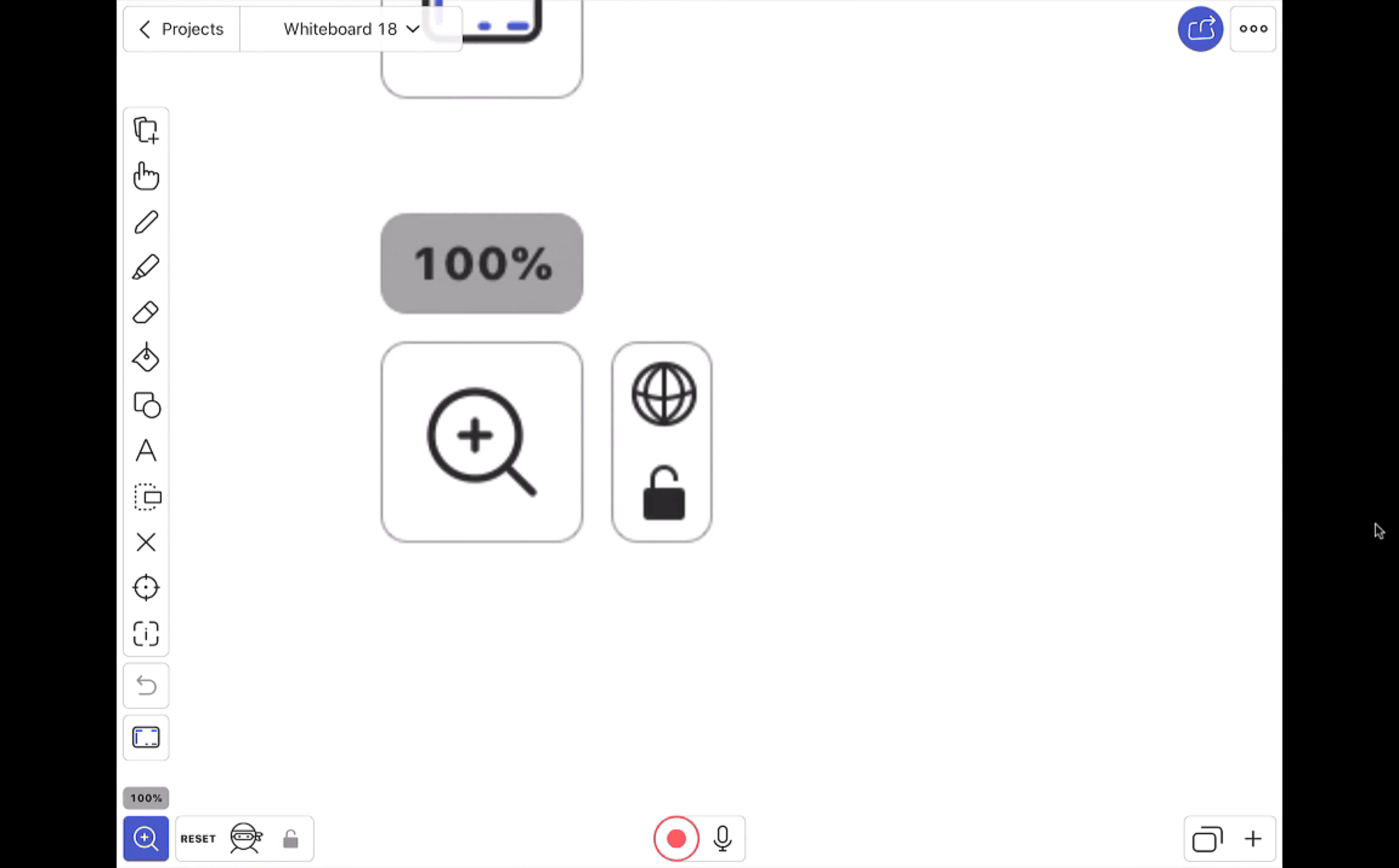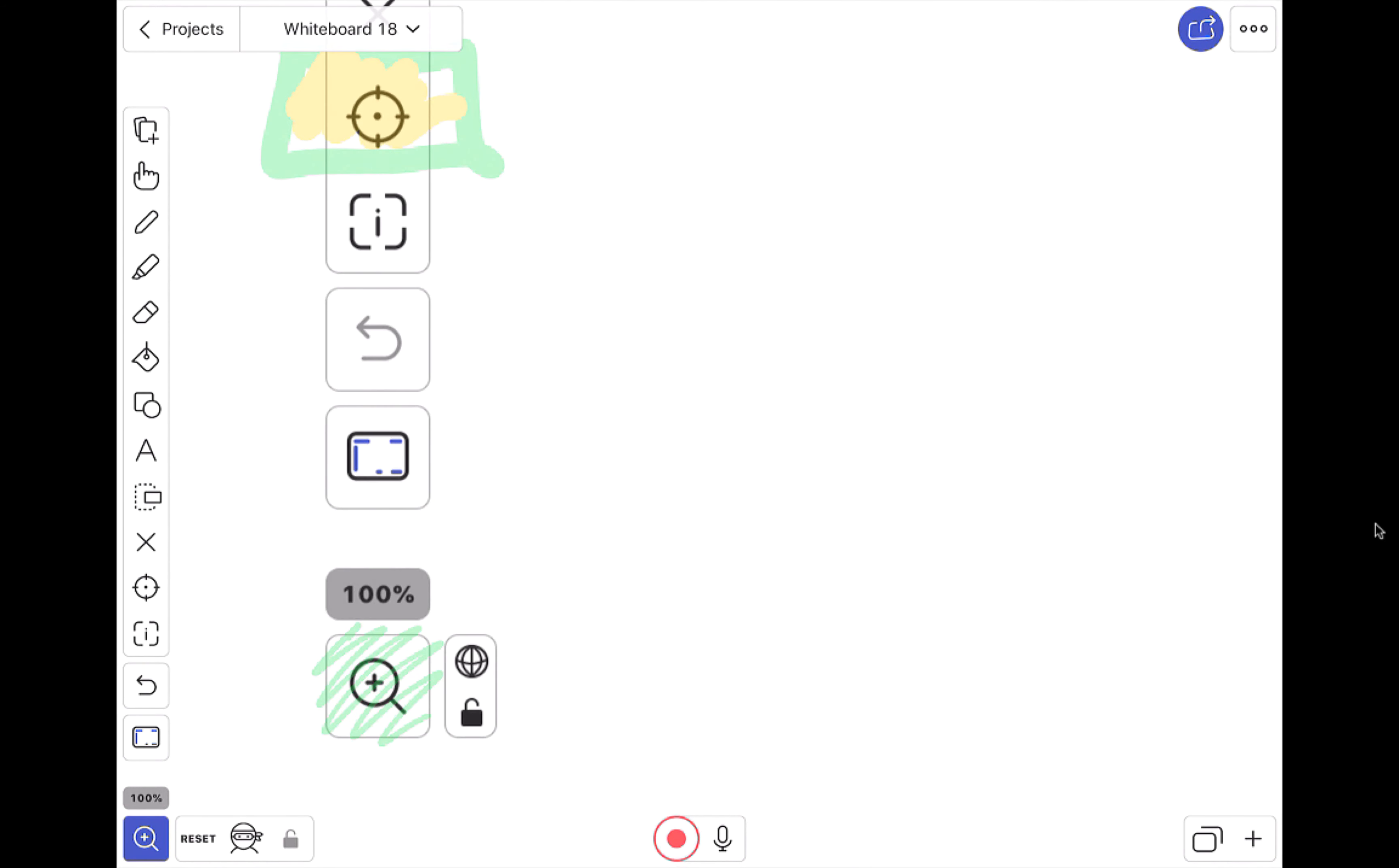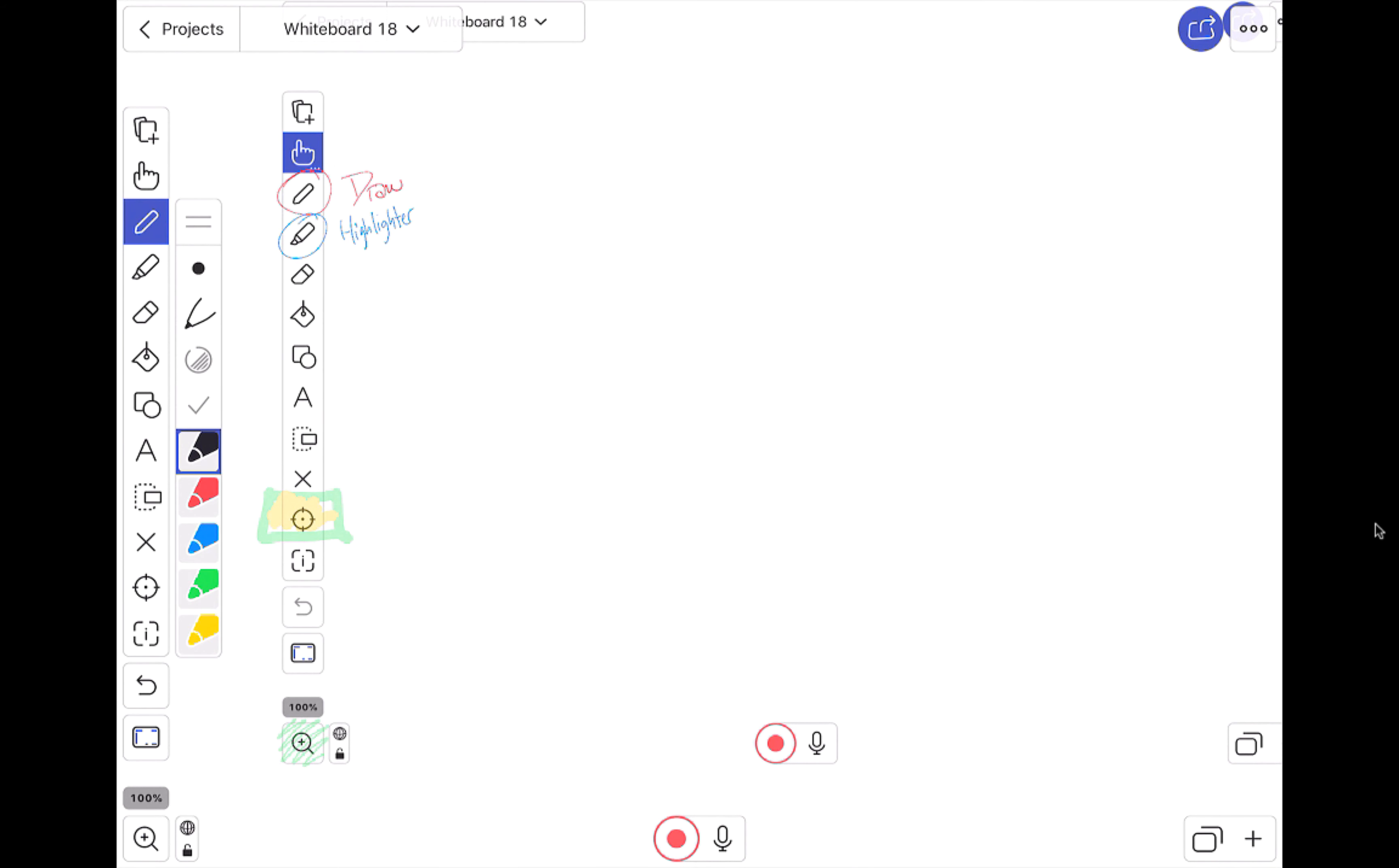And then the last tool that I use probably the most frequently is this zoom and pan tool right here. It just makes shifting around and manipulating what you want to show on the page much easier. Great, so what can you do with the Explain Everything app?